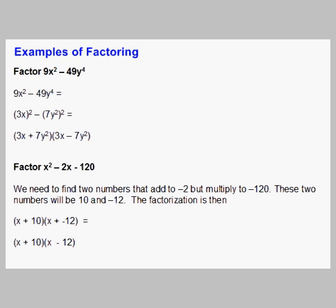We're going to look at some examples of factoring. We're going to start with factor 9x² - 49y⁴. This falls into the form difference of squares.